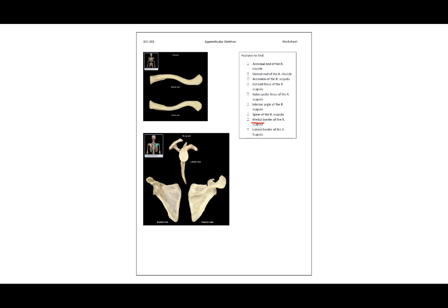We have the medial and lateral borders of the right scapula — this being the medial border, and also this is a medial border. This lateral border is on the same side as that glenoid fossa.